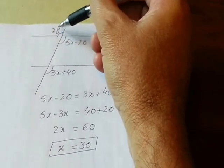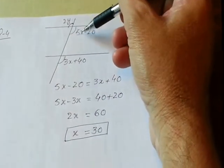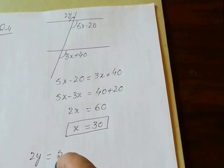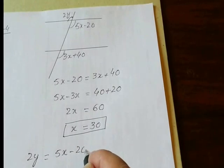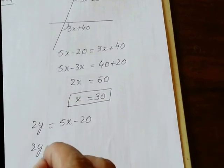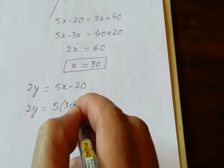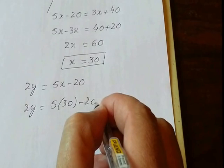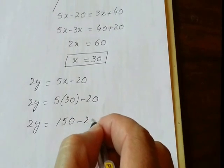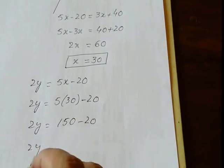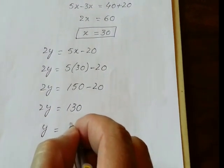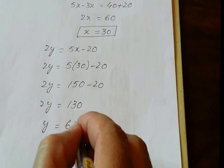To find y: the two angles 2y and (5x − 20) are vertically opposite angles, so 2y = 5x − 20. Substituting x = 30: 2y = 150 − 20 = 130, therefore y = 65.